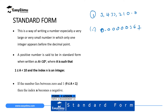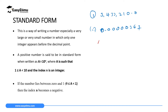For us to write them in standard form, we have to write them in the format a times 10 raised to power n, where a ranges between 1 and 10 — a is not less than 1 and not more than 10. The index n should be an integer: 1, 2, 3, 4, 5, and so on.